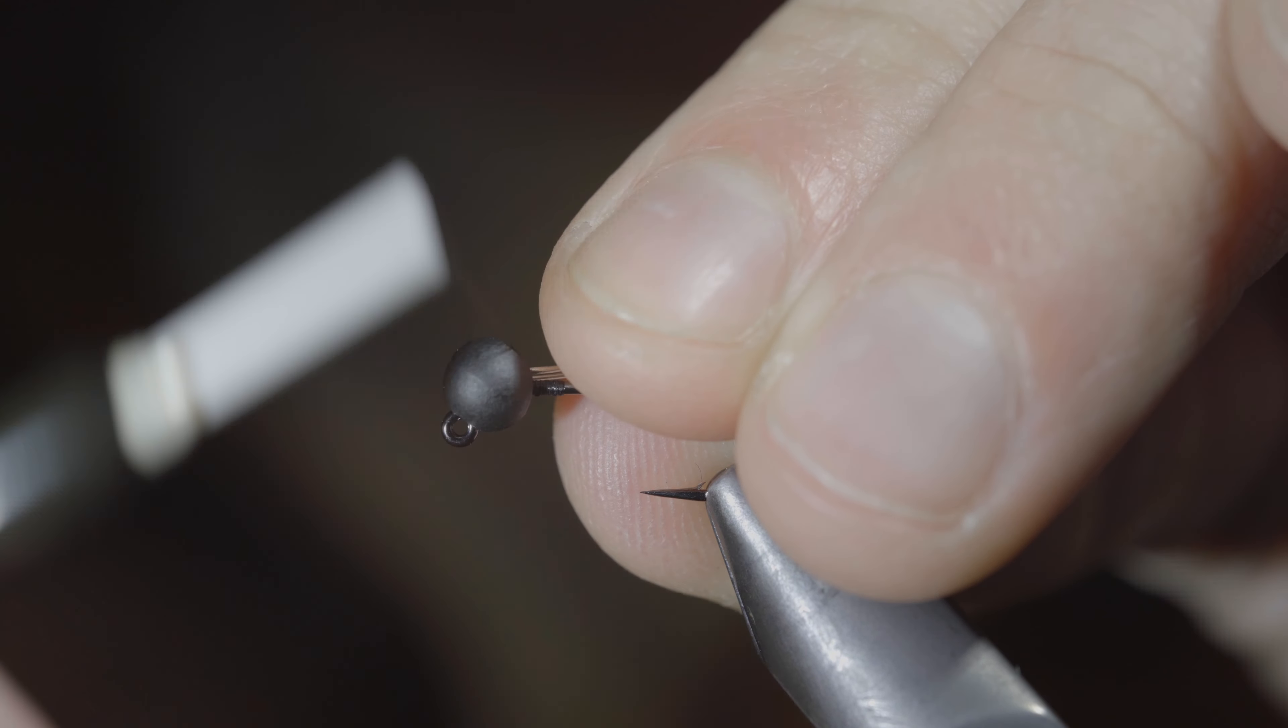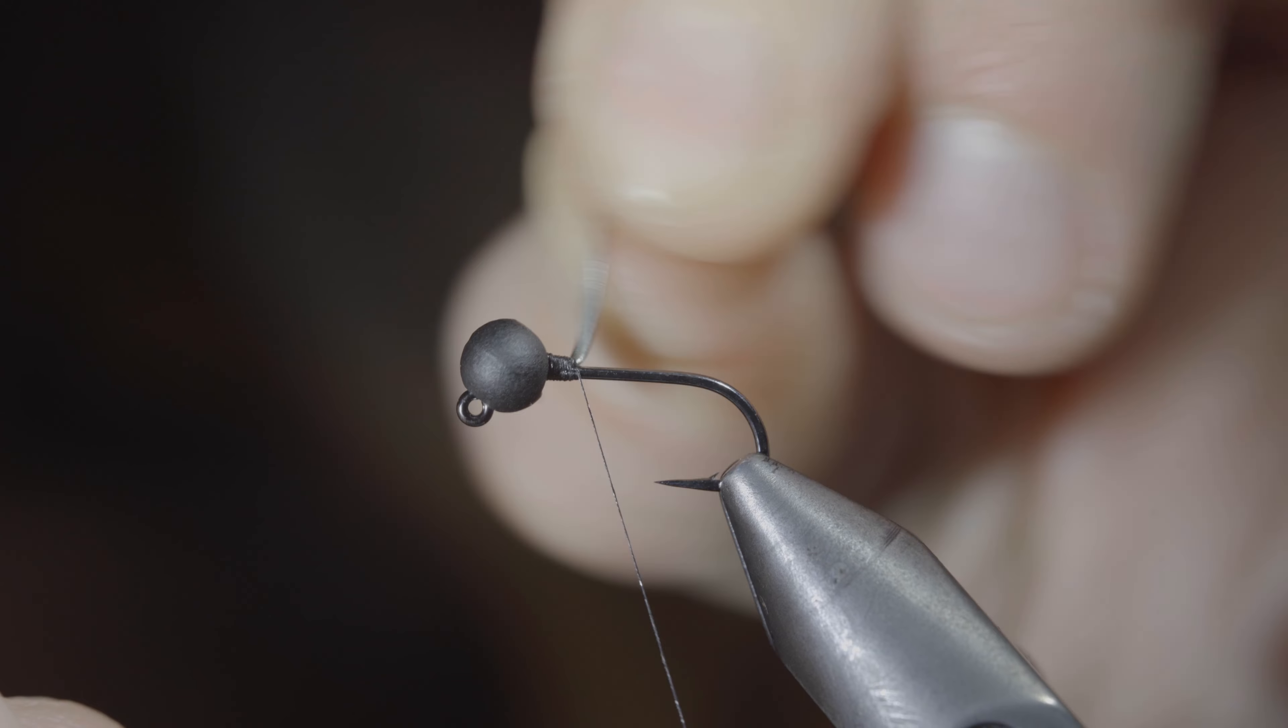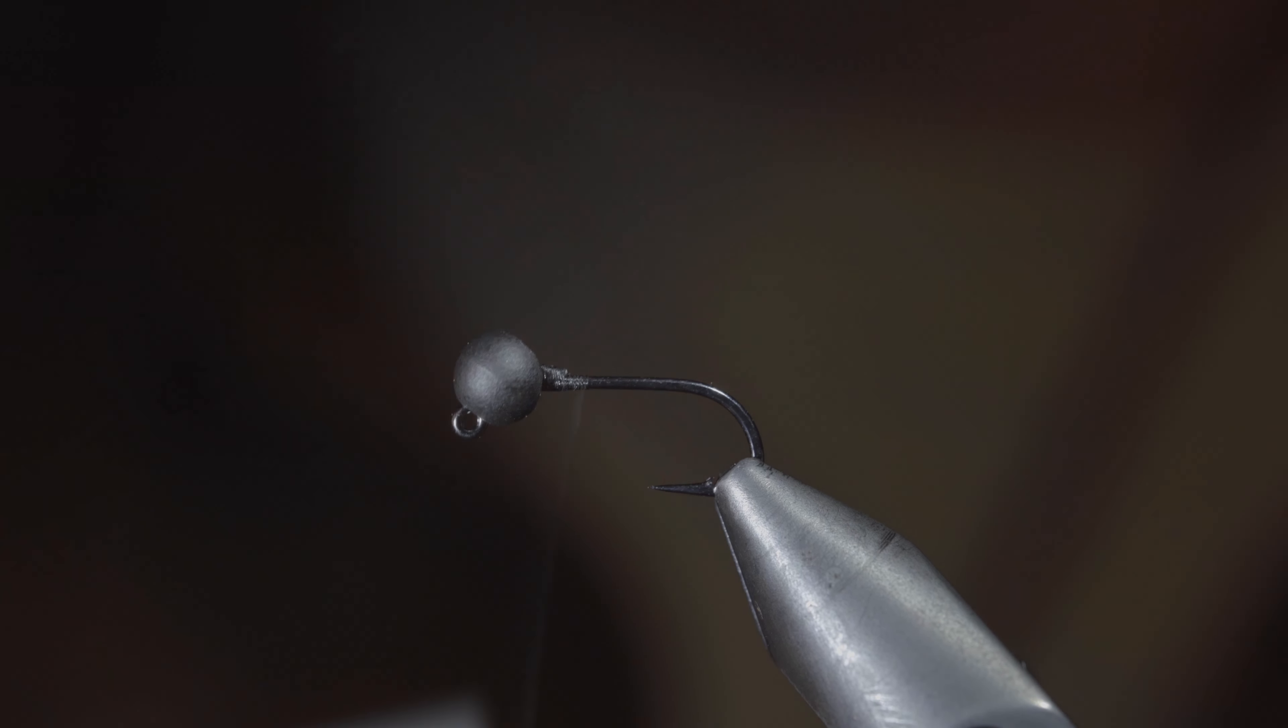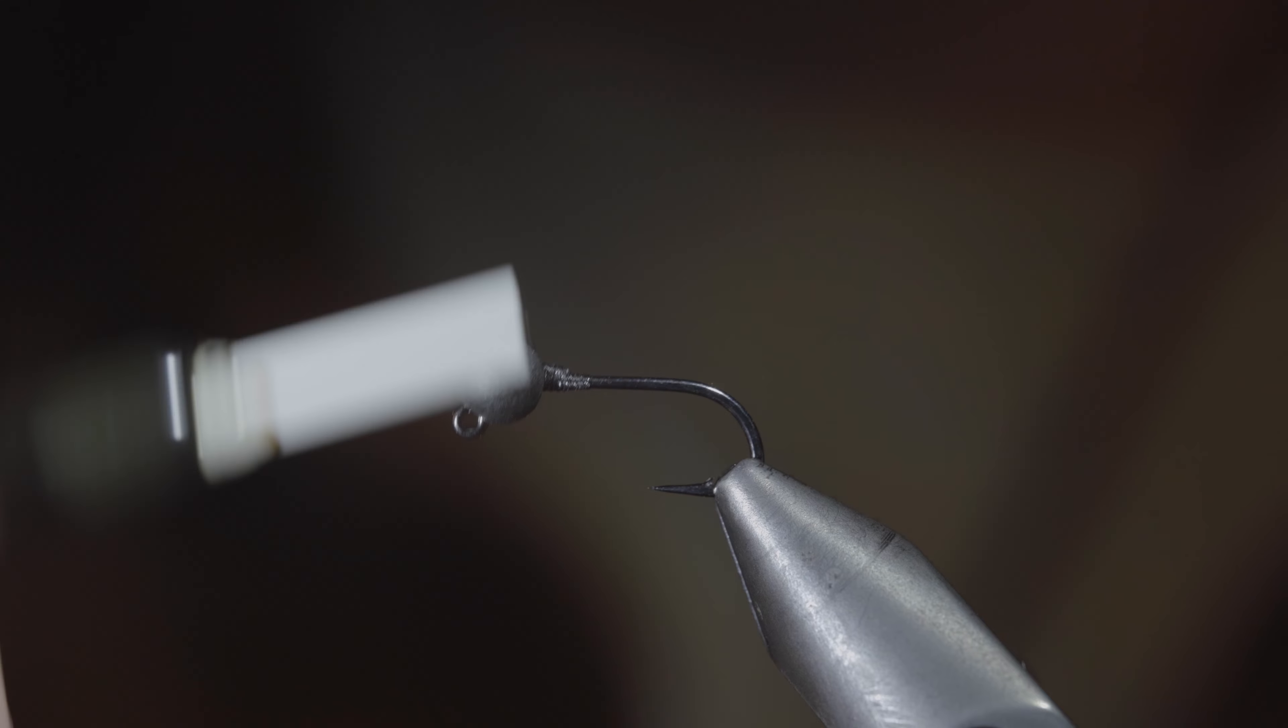We'll secure a black thread to our hook shank, inserting some lead-free wire into our bead to help secure it in place. Helicopter your excess free.